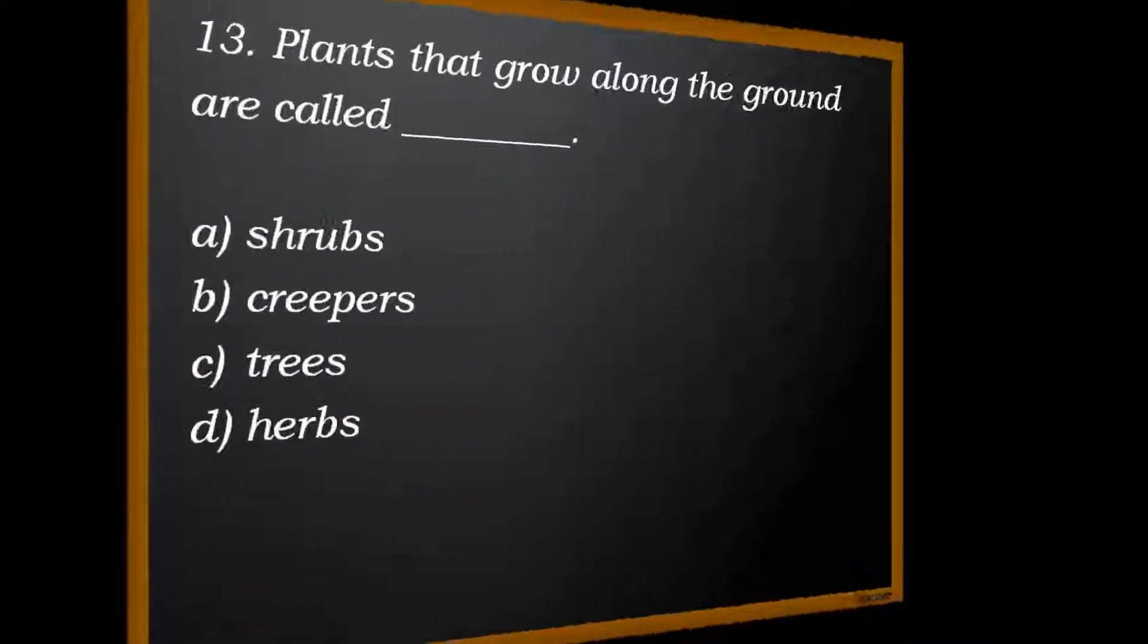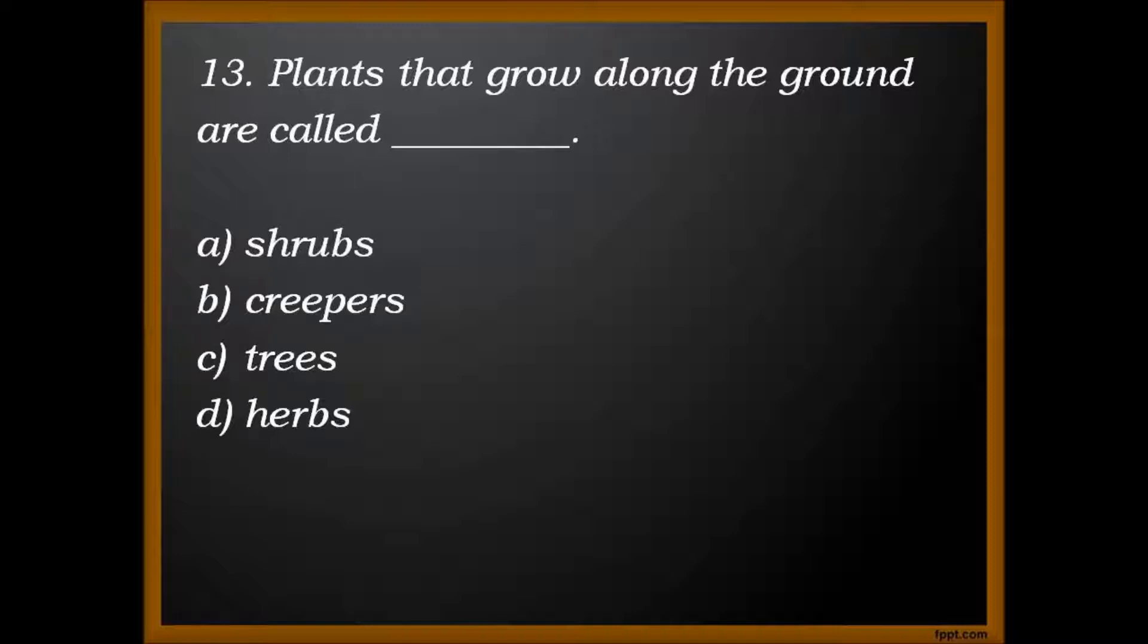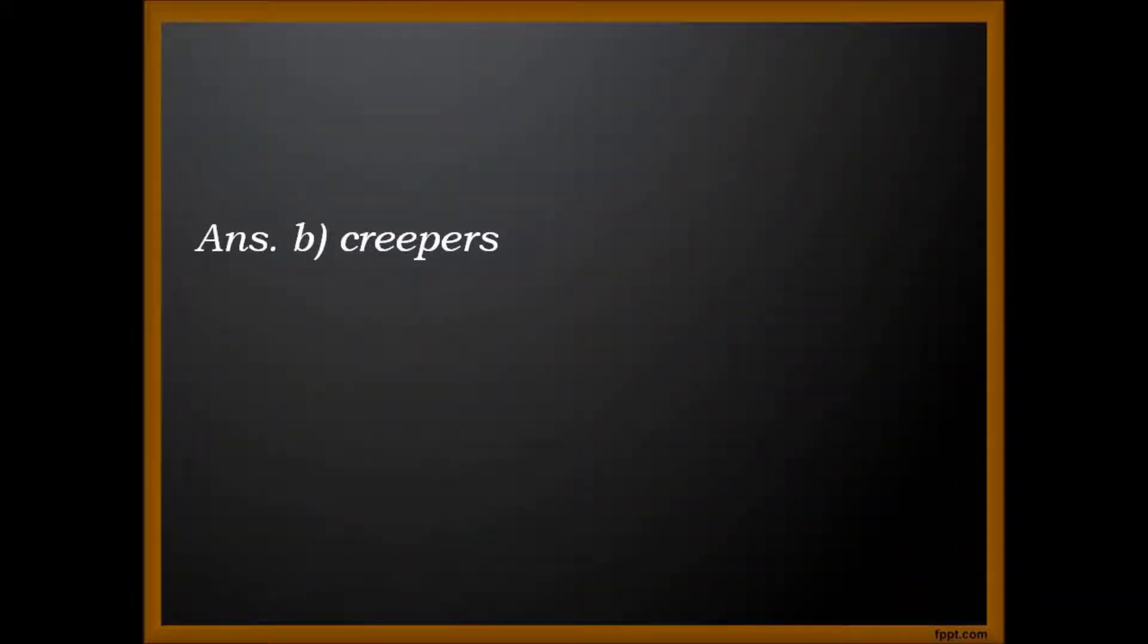Next question. Plants that grow along the ground are called A. Shrubs. B. Creepers. C. Trees. D. Herbs. Answer. B. Creepers.